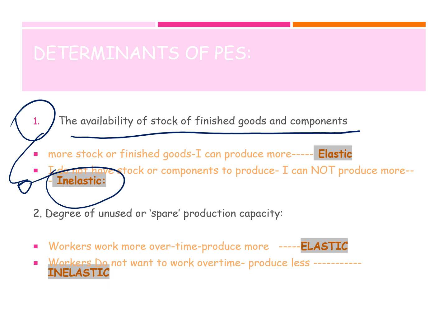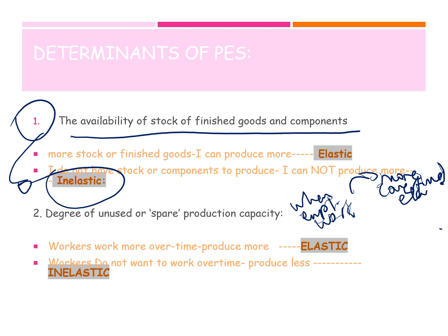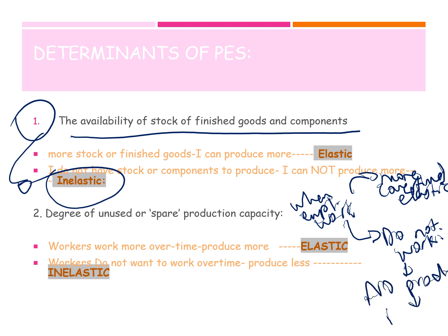The second reason is the degree of unused or spare production capacity. For example, when employees work overtime, it means they can produce more — the supply would be elastic. If the employees are not working, it means there is no production. When there is no production and they cannot produce more, the supply would be inelastic.